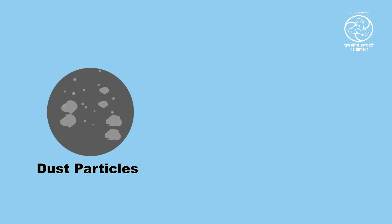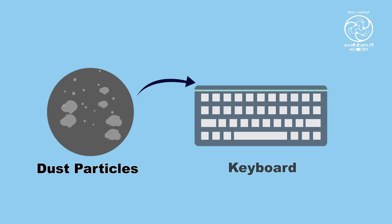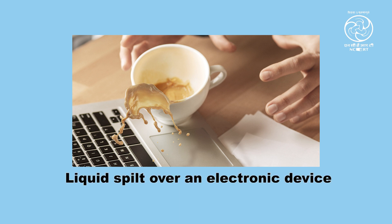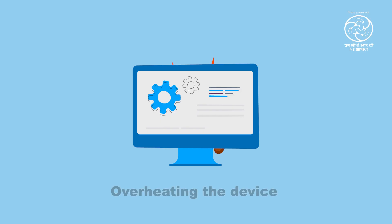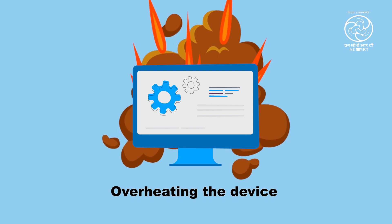The ways in which a device can get damaged may include, but are not limited to, the following: dust particles can damage the internal parts of a keyboard; liquid spilt over an electronic device can spoil it beyond repair; dropping or banging the device against a hard surface; and overheating the device.